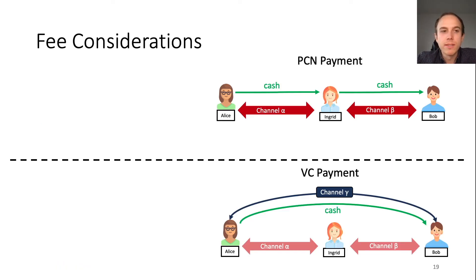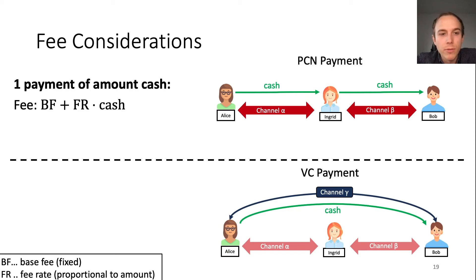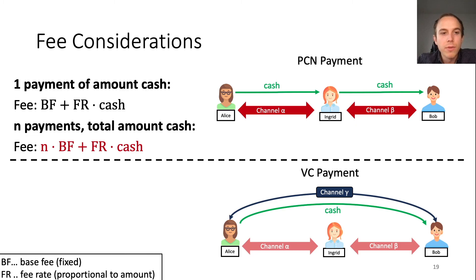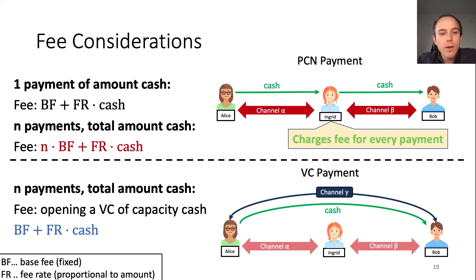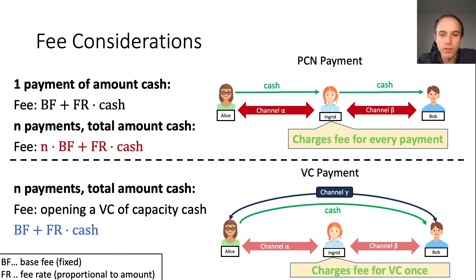Regarding fees: in payment channel networks like the Lightning Network, when a payment of amount cash is routed through Ingrid, she charges a base fee plus a fee rate times the amount. For N payments summing to a total amount, Ingrid charges N times the base fee plus the fee rate times the total amount. In the virtual channel case, Ingrid only charges for the opening of the virtual channel — a base fee plus the fee rate times the total capacity — and subsequent payments are free with no fee charged.